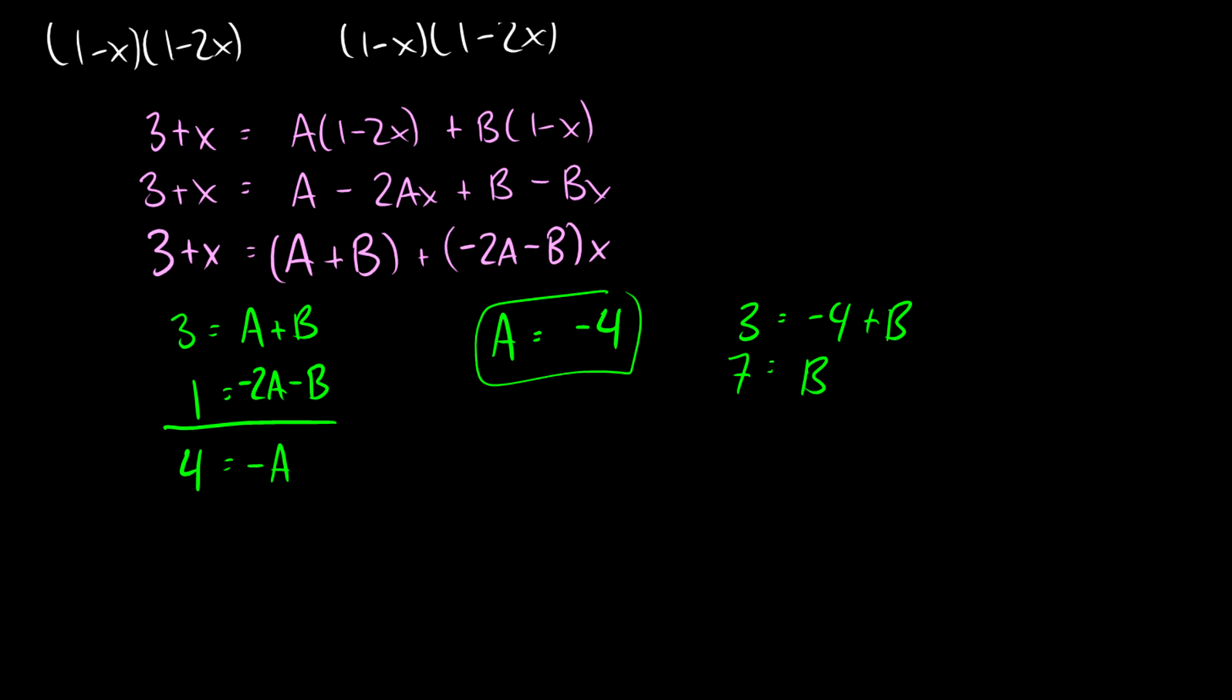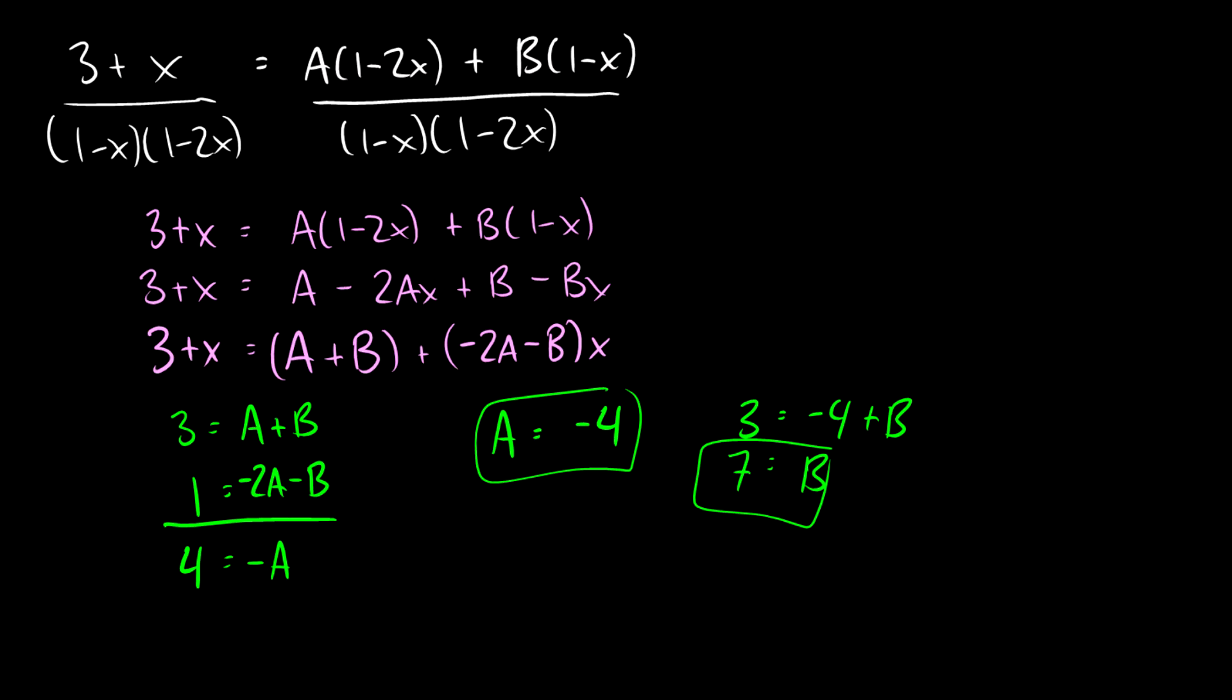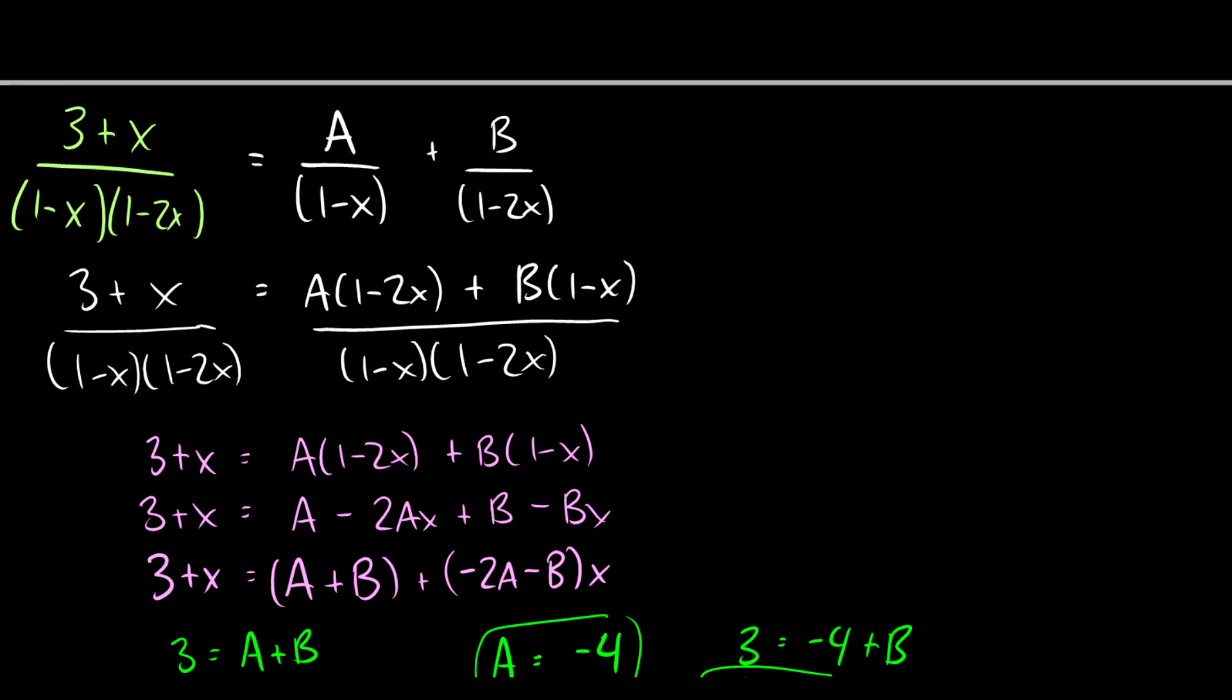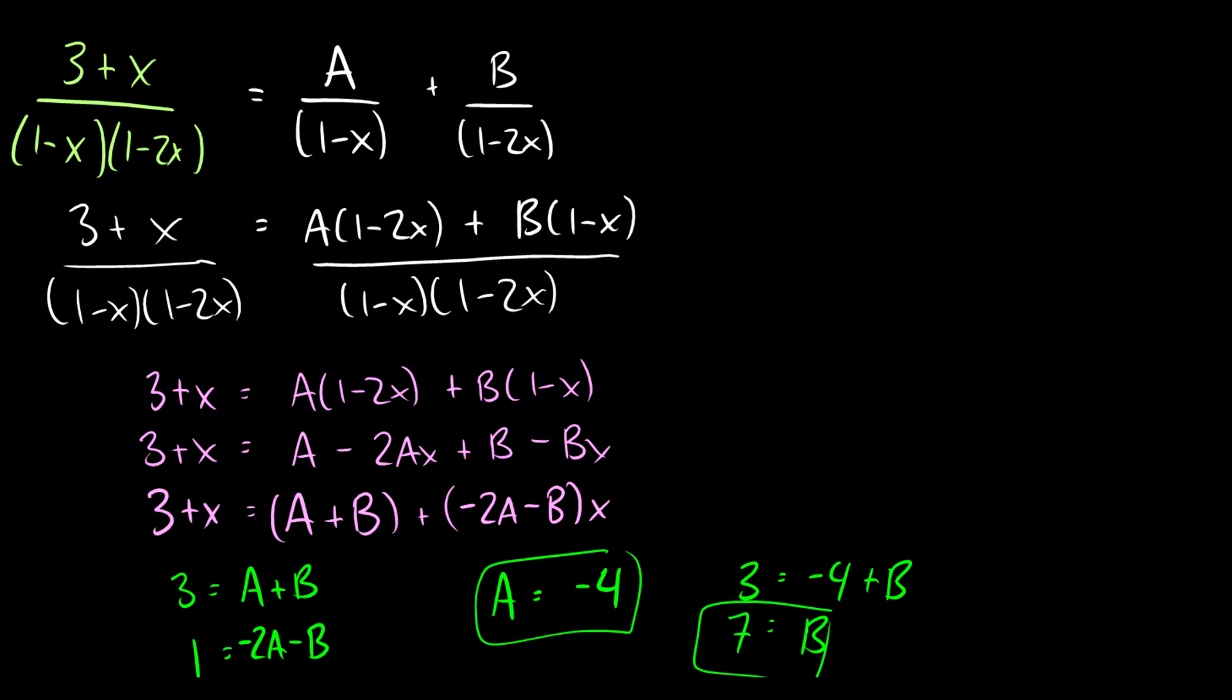So now that we have A equals negative 4, B equals 7, we can now substitute in the original equation. So let's make a replacement here. A is negative 4 and B is 7. So we've now decomposed our partial fractions.